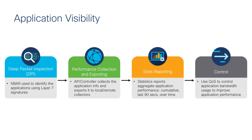Within the WLC UI, users can view statistics about different application performance over an interval of time. Additionally, with Application Visibility enabled, users can define control rules with policing mechanisms at the client level, such as through app-based QoS policies. So now, let's hop onto the WLC to see how we can enable this.